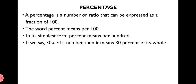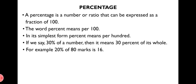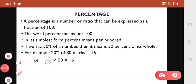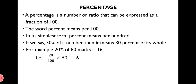If we say 30% of a number, it means 30% of its whole. For example, to calculate 20% of 80 marks: it equals 20/100 × 80. Cancelling zeros gives 2/10 × 8, which equals 16. So 20% of 80 marks is 16 marks.